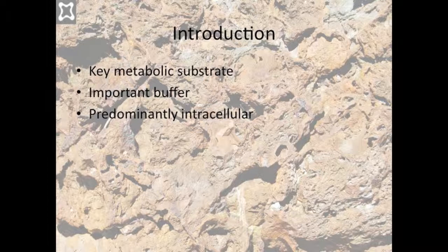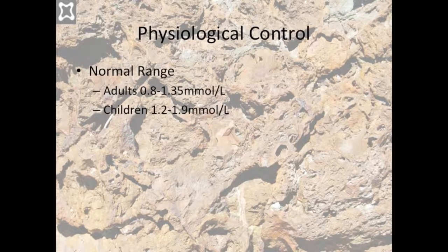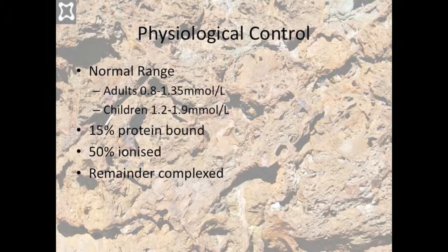By and large, it is an intracellular anion. Plasma phosphate is tightly controlled between 0.8 and 1.35 millimoles per litre in adults and 1.2 to 1.9 in children. 15% is protein bound, half is ionised and the remainder circulates complexed with either calcium or magnesium.